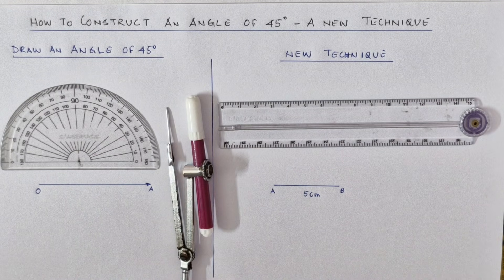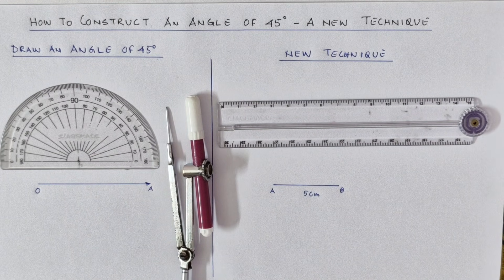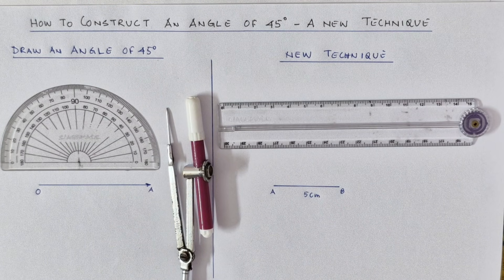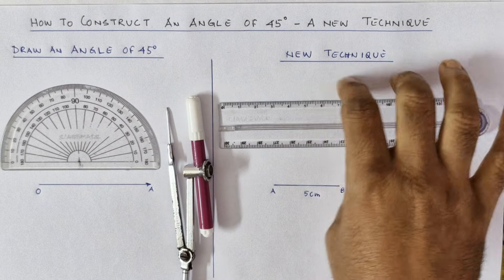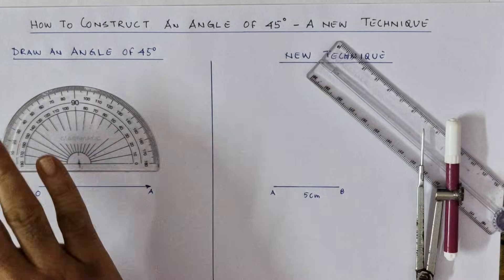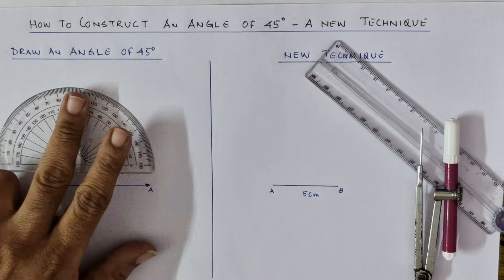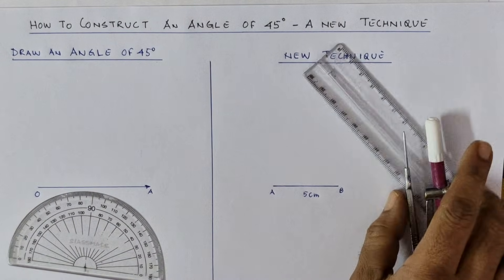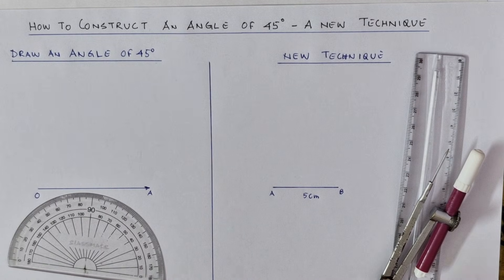Hello everyone and welcome back to Fun Methodology. Today's topic is how to construct an angle of 45 degrees in a new way or another way. As usual, I have made two partitions or two halves. In the left half we'll see how to draw an angle of 45 degrees in the usual way or the fastest way, and on the right we'll see the new way or new technique.